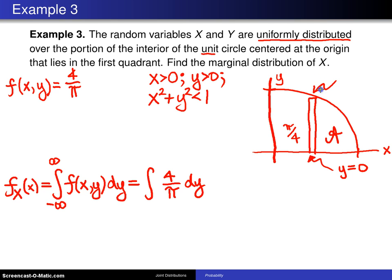The lower limit here is the x-axis, which is the same as saying y equals 0. The upper limit will be the circle, and you know that the circle is x squared plus y squared equals 1. When you solve that for y, you get y is equal to the square root of 1 minus x squared. So the limits run from 0 to the square root of 1 minus x squared.